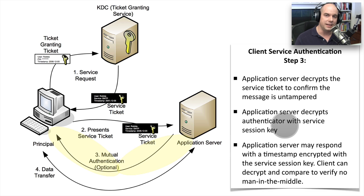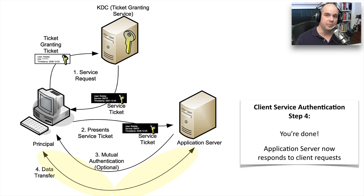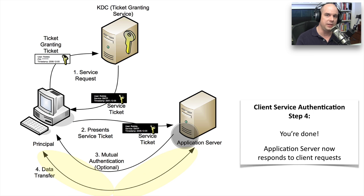There's also an optional process: the application server may send a timestamp back to the client encrypted with the service session key. By sending that information back, we are checking for a man-in-the-middle and ensuring nobody can replay this information later to gain access to these resources. After exchanging all of this encrypted information, we are now talking directly to the application server. If the application server confirms everything checks out, you have access to those resources. This Kerberos process takes place any time we need to authenticate for the first time and every time we need access to yet another resource.